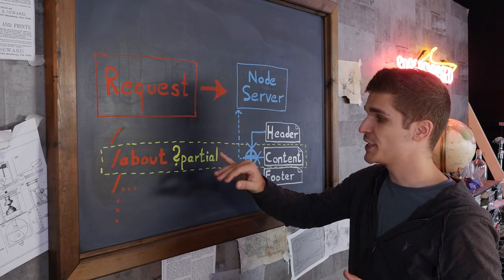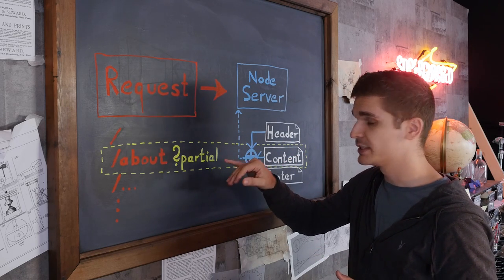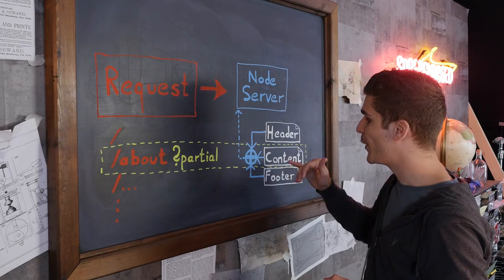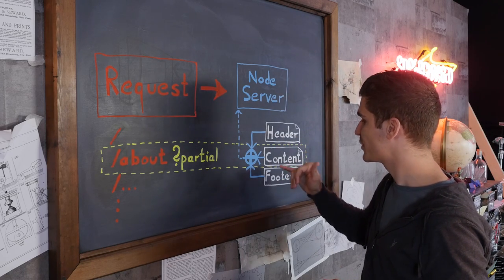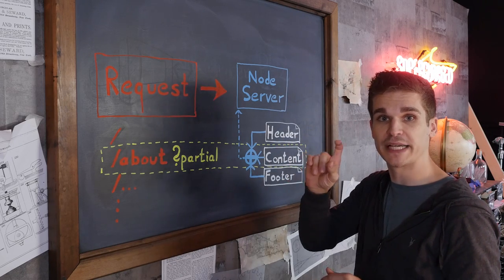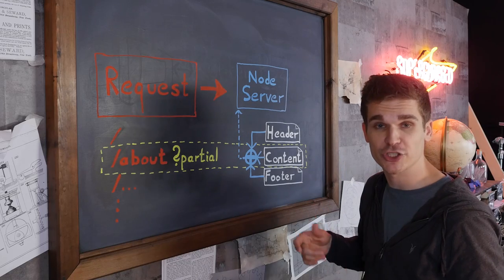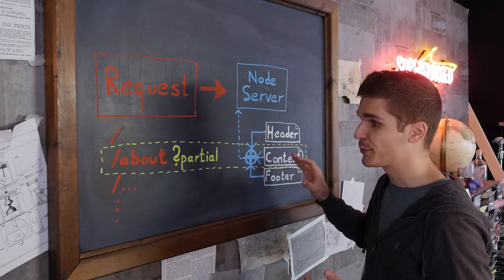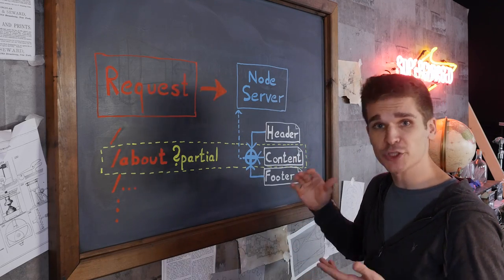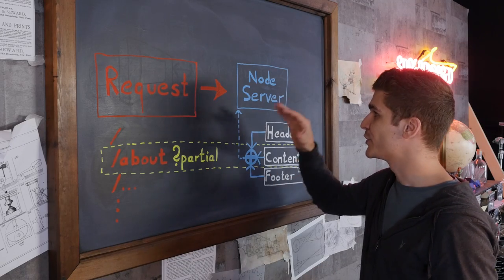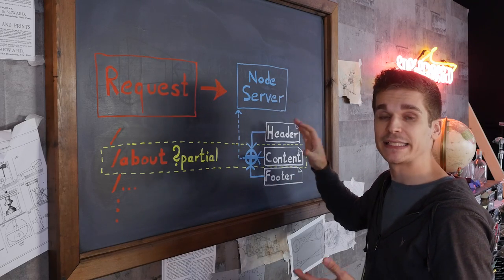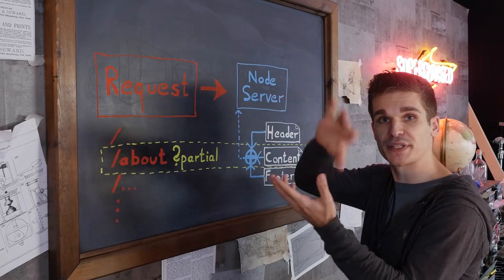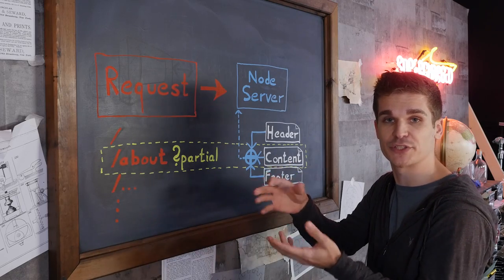However, if there is a partial flag present in the query part, that instructs the server to only send back the contents, which is what happens when we do dynamic in-page navigation. And this is actually what is called server-side rendering, because if the initial request is for 'about', the server will basically inject the contents for 'about' into the return page, into the scaffolding that is around it.